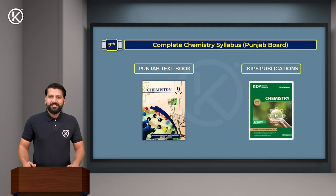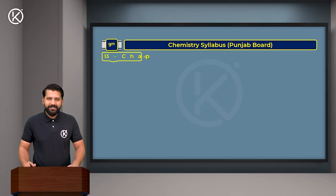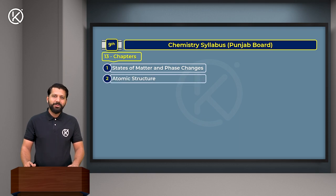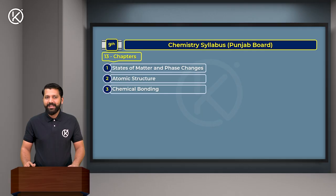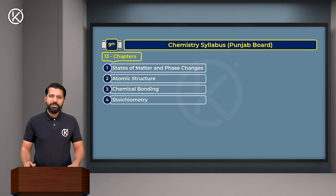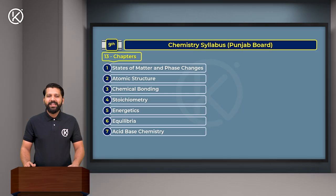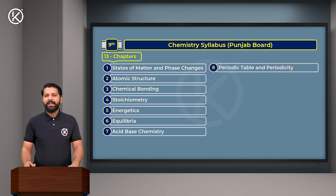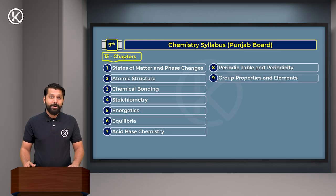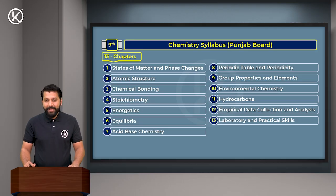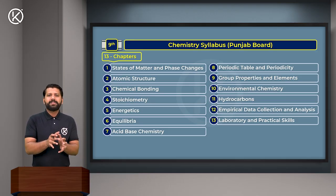We have 13 chapters included in the chemistry textbook. These are: Chapter 1 - States of Matter, Chapter 2 - Atomic Structure, Chapter 3 - Chemical Bonding, Chapter 4 - Stoichiometry, Chapter 5 - Energetics, Chapter 6 - Equilibria, Chapter 7 - Acid-Base Chemistry, Chapter 8 - Periodic Table and Periodicity, Chapter 9 - Group Properties and Elements, Chapter 10 - Environmental Chemistry, Chapter 11 - Hydrocarbons, Chapter 12 - Empirical Data Collection and Analysis, Chapter 13 - Laboratory and Practical Skills.